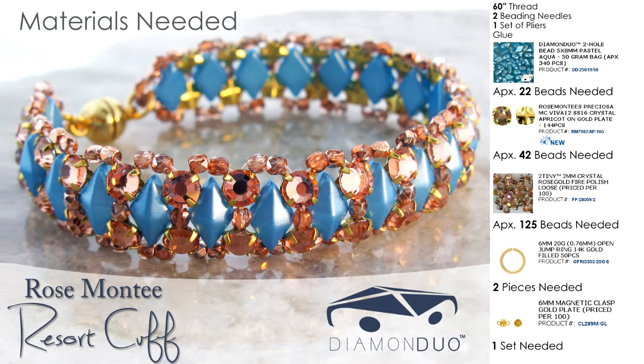You'll need around 22 Diamond Duo beads in aqua color. You'll also want 42 Rosemonti crystals size SS16 in apricot on gold plate. You'll want around 125 2mm fire polish beads, or what we call our 2 tiny bead. You'll also need two open jump rings in gold, and finally a magnetic toggle and clasp set in gold.